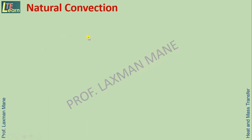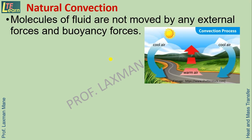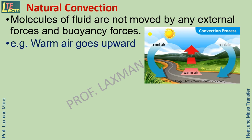There are mainly two types of convection: natural convection and forced convection. In natural convection, molecules of fluid are not moved by any external forces but by buoyancy forces. For example, cold air, because of high density, comes down in contact with the ground. Since the ground is hot, the nearby air gets heated, and the warm air rises in an upward direction. This happens by natural convection.